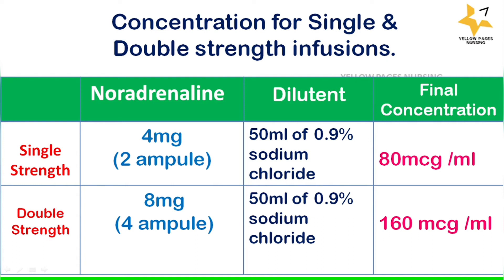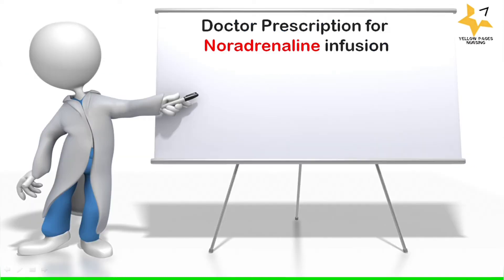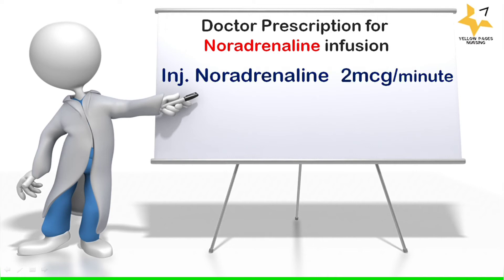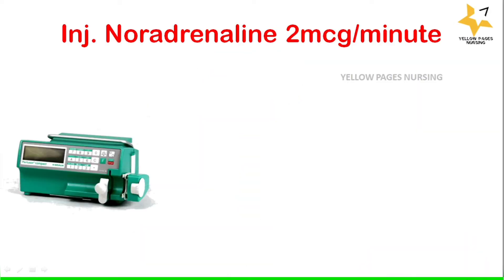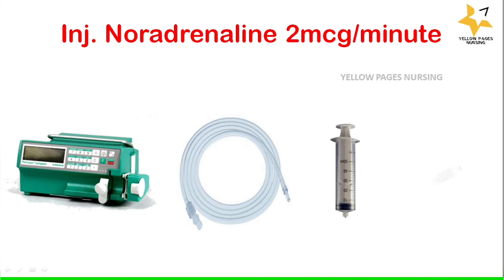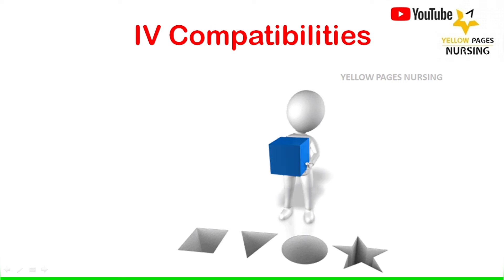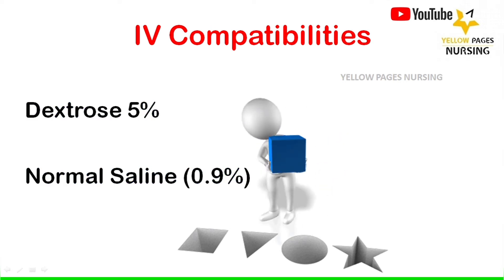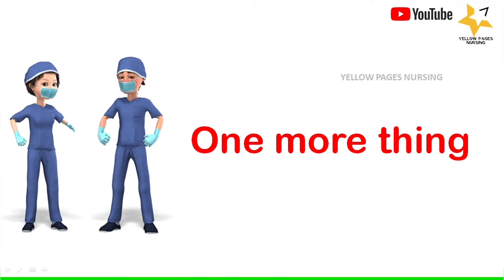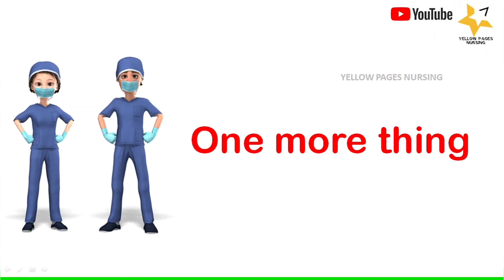The doctor's prescription is: injection noradrenaline 2 micrograms per minute. To prepare this, you need a syringe pump line, a 50 ml syringe, and a solution for dilution. Compatible dilutants include sodium chloride or dextrose 5%. A very important requirement is the presence of a central venous access line before starting the noradrenaline infusion.